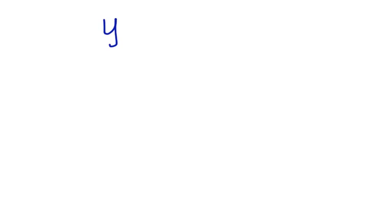Do you know how to write the equation of a line if you've been given the y-intercept and the slope of the line? First, here is slope-intercept form: y equals mx plus b, where m is the slope and b is the y-intercept.